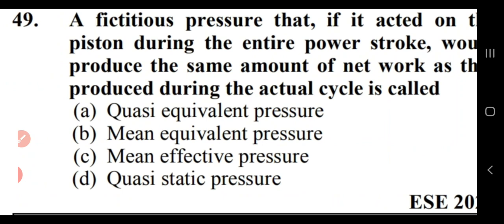A fixed fictitious pressure that if it acted on the piston during the entire power stroke would produce the same amount of net work as that produced during the actual cycle is called mean effective pressure — option C.